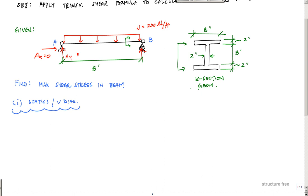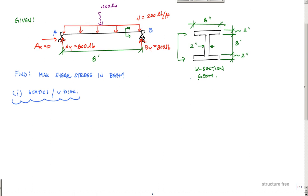200 times 8 gives me a resultant here of 1600 pounds, which means that Ay will be equal to 800 pounds—they'll take half—and By will also take half. When the loading and the boundary conditions or reactions are symmetric, then you're good to go.